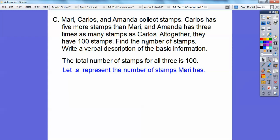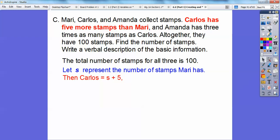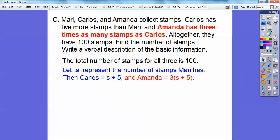We'll let S equal the number of stamps that Marie has because it seems to revolve around Marie because Carlos has five more stamps than Marie and then Amanda has three times as many as Carlos. So if S represents the number that Marie has, Carlos has five more than that. So that's going to be S plus 5. Five more than means addition. And then Amanda has three times as many as Carlos. So we're going to wrap this in parentheses and make that three times that many right there. And then we're going to use this information. We know that this is Marie right here, S equals Marie.